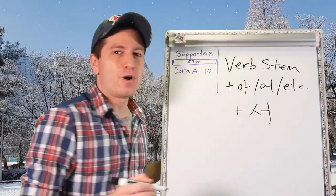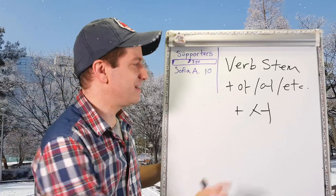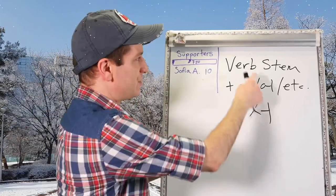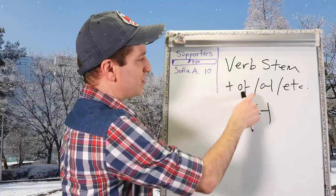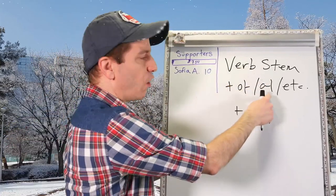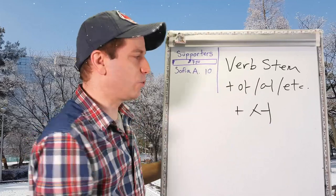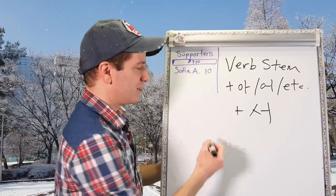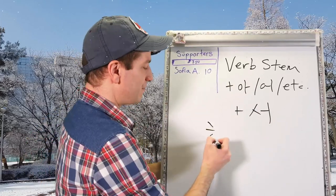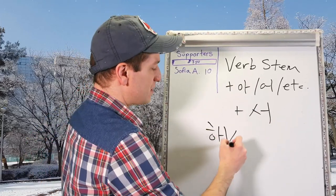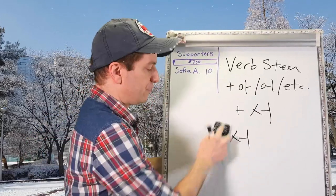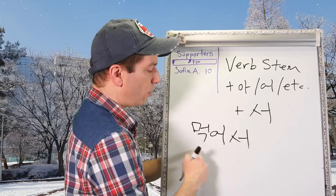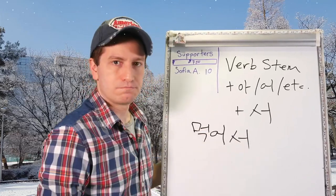The form we're going to be learning about today is 서. In order to make it, you take a verb stem and attach 아 or 어, like usual, and then attach 서. So the verb 하다 just becomes 해서. The verb 먹다, to eat, conjugates as 먹어서.